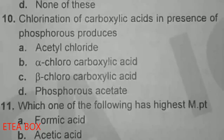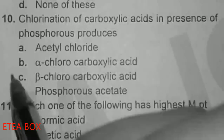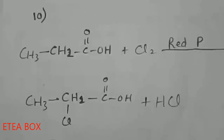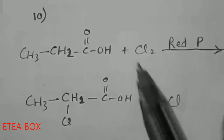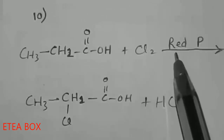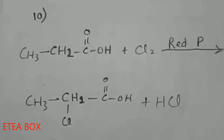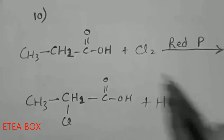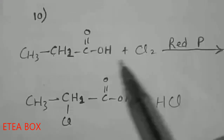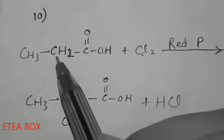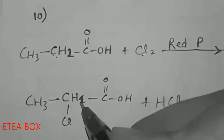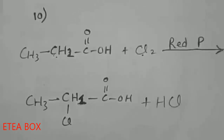Chlorination of carboxylic acid in the presence of phosphorus produces alpha-chlorocarboxylic acid — option B is correct. When propanoic acid reacts with chlorine in the presence of red phosphorus, it gives alpha-chlorocarboxylic acid plus HCl. The bond between carbon and hydrogen is broken, one chlorine attaches to the carbon and the other attaches to hydrogen, giving the alpha-chlorocarboxylic acid.